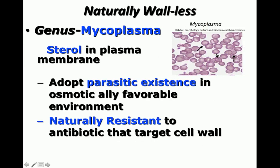One bacterium that is naturally wallless is Mycoplasma. Mycoplasmas are naturally wallless bacteria with no cell wall, only a cytoplasmic membrane containing sterols. They live in osmotically favorable environments and are naturally resistant to all antibiotics that target the cell wall. This is a common MCQ topic.